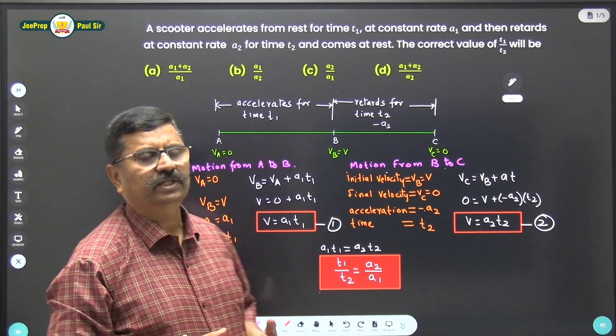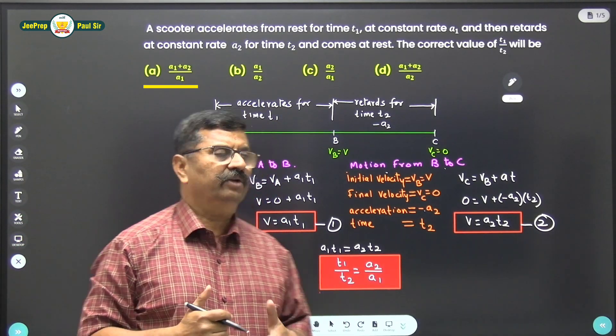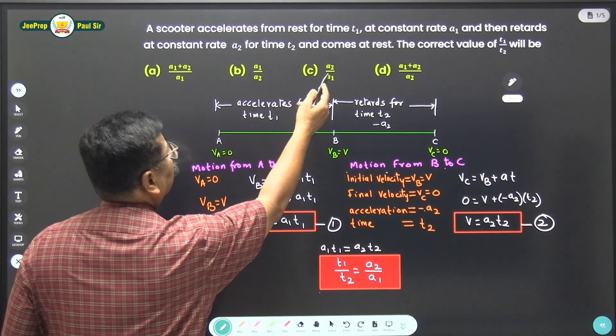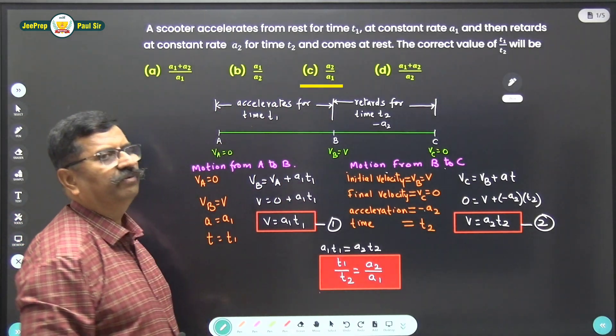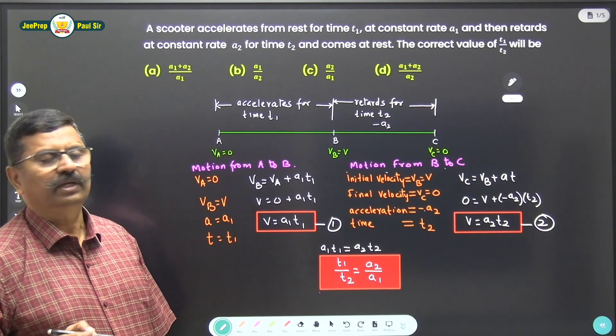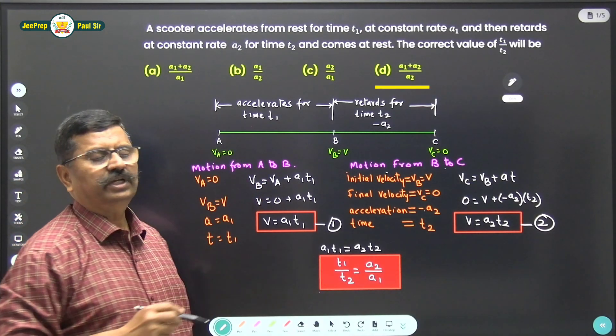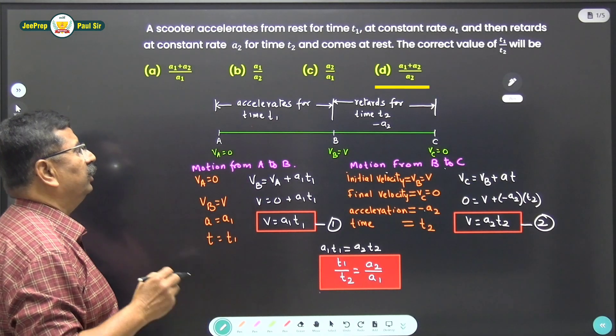The first option is a1 plus a2 divided by a1, second option is a1 upon a2, third option is a2 by a1, while the last option is a1 plus a2 divided by a2.